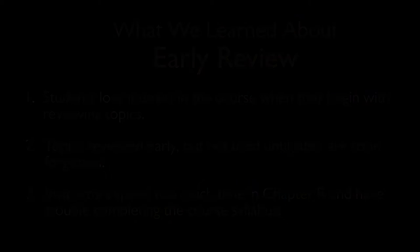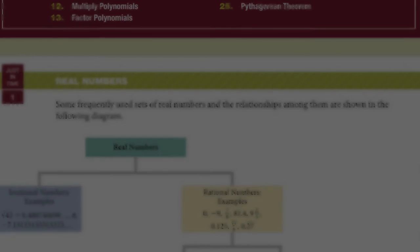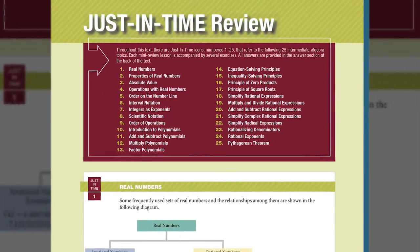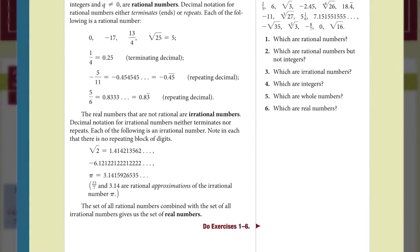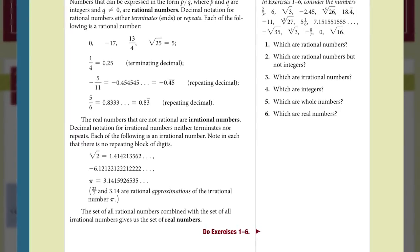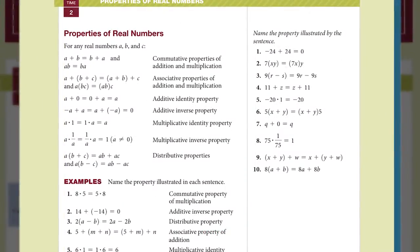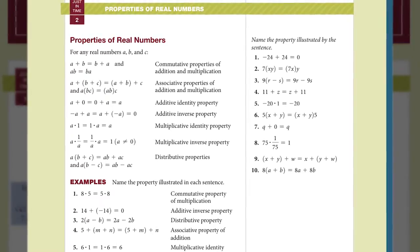For these reasons, we have created a new just-in-time review feature that replaces and shortens the coverage of the topics included in the original Chapter R. Review of prerequisite algebra topics is now presented when students need it most. A set of 25 numbered short review topics creates an efficient review of intermediate algebra topics. This feature is placed at the back of the text.